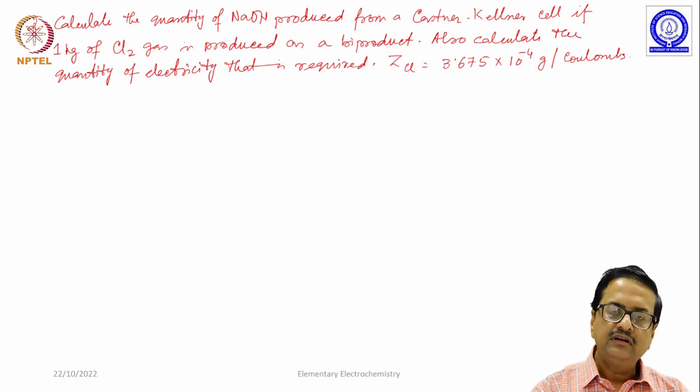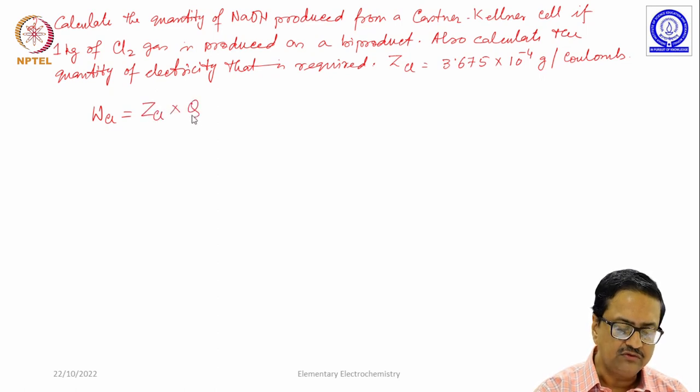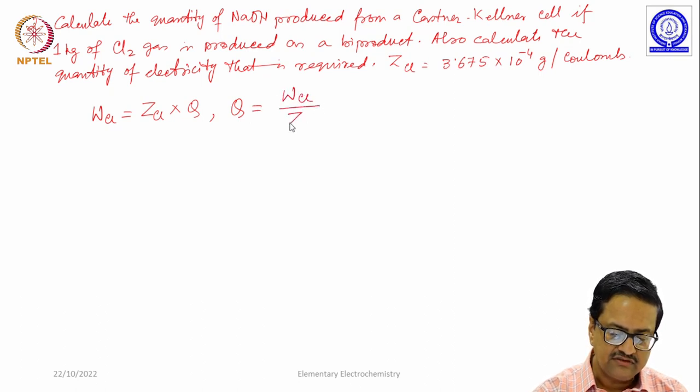Using Faraday's laws of electrolysis one can easily write W_Cl equals z_Cl times Q, that is the quantity of electricity used. And then Q equals nothing but W_Cl divided by z_Cl.